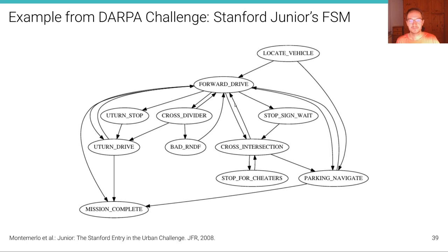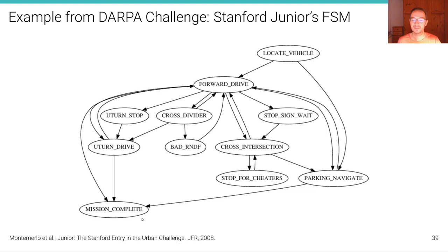From the drive state, from time to time we have to cross an intersection, or park, or navigate a parking lot. From the cross intersection state, we can move back into the forward drive state. From the forward drive state, we can also move into the U-turn state where we do a U-turn and ultimately complete the mission.